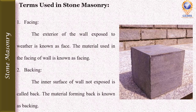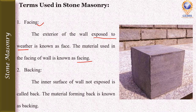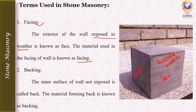The terms related to stone masonry: the first one is facing. The exterior of the wall exposed to weather is known as the face. The material used in the facing of the wall is known as facing. The side which is exposed to weather is called the face or the exterior of the wall.